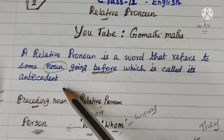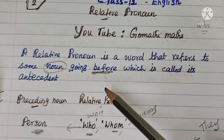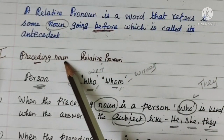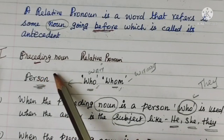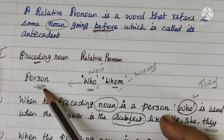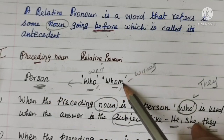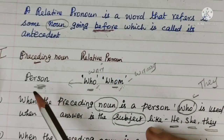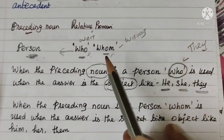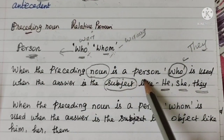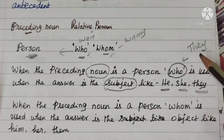If you look at this, it is easy to understand with an example. Now, in a sentence, if the preceding noun is a person, we ask: who is the person? When the preceding noun is a person, we use 'who'.